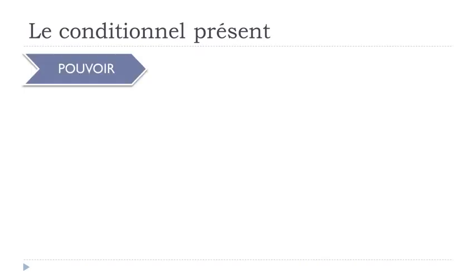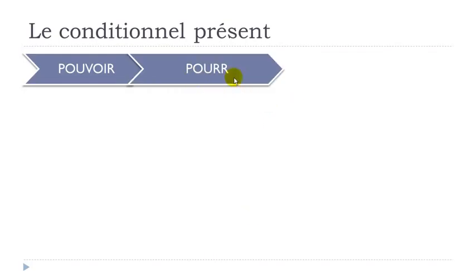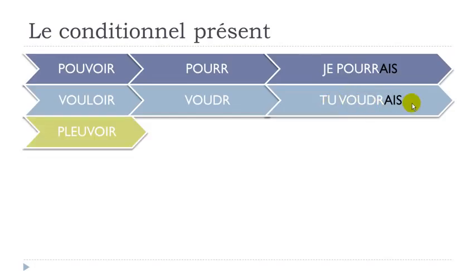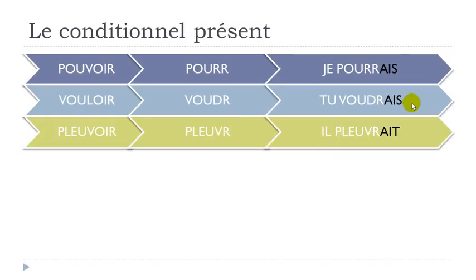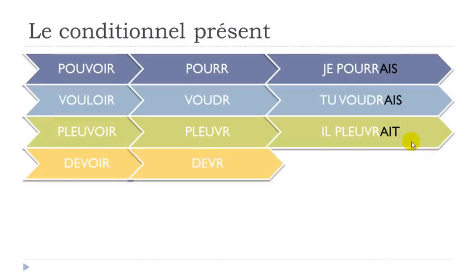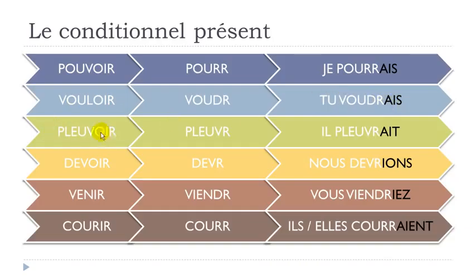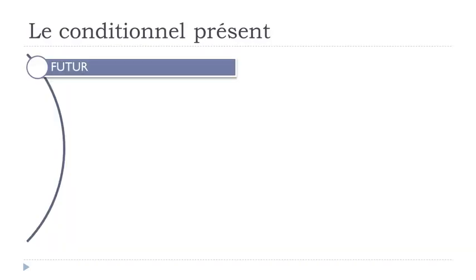One more list of exceptions: pouvoir will become 'pourr' — je pourrais; vouloir will become 'voudr' — tu voudrais; pleuvoir will become 'pleuvr' — il pleuvrait.